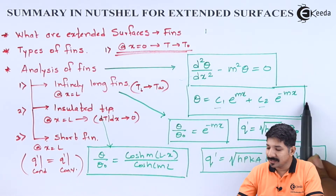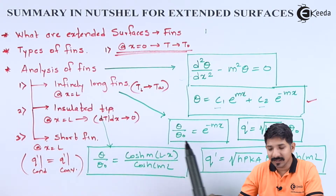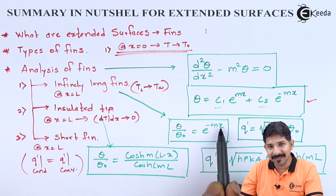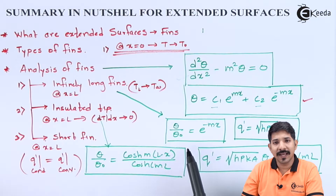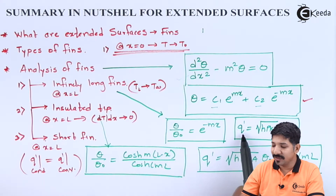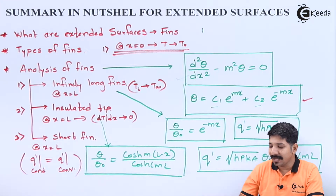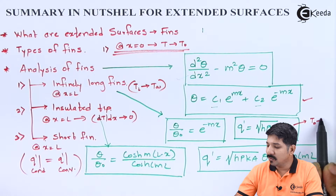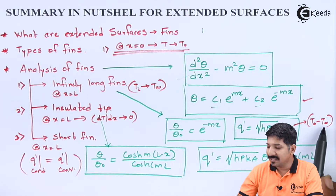By substituting C₁ and C₂ into the general solution we get the temperature distribution. For the first case — the infinitely long fin — the temperature distribution is θ/θ₀ = e^(-mx). Using either Fourier's law or Newton's law of cooling, the heat transfer rate for this case is q = √(HPKa) · θ₀, where θ₀ = T₀ − T_infinity.